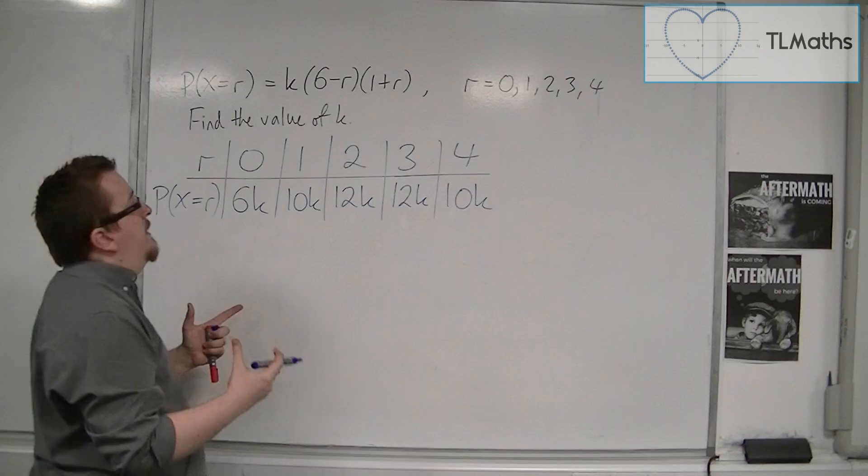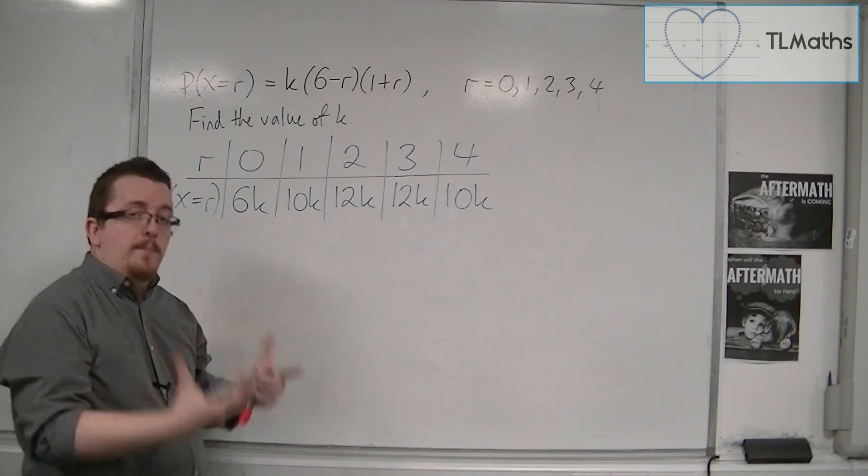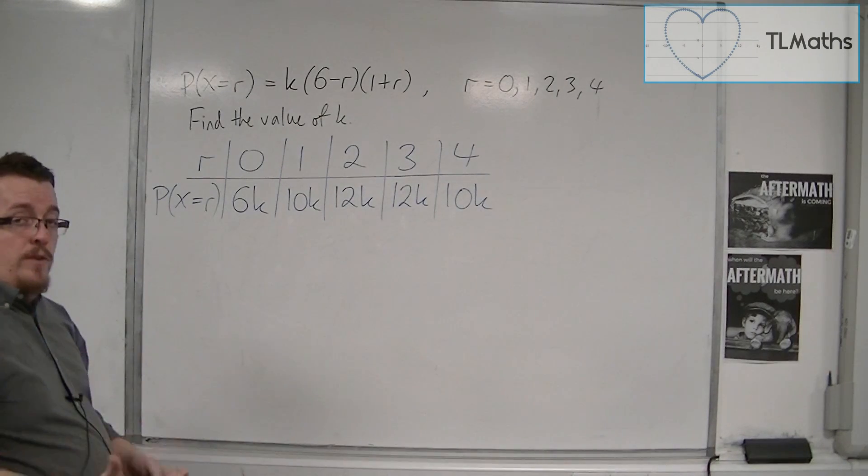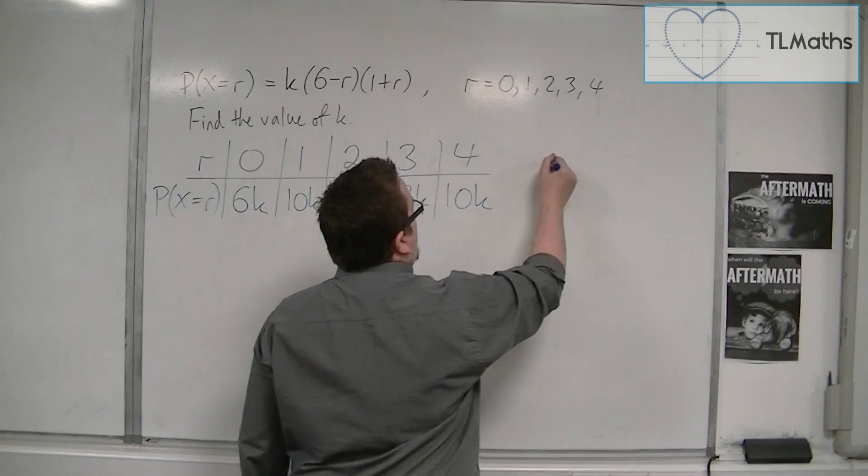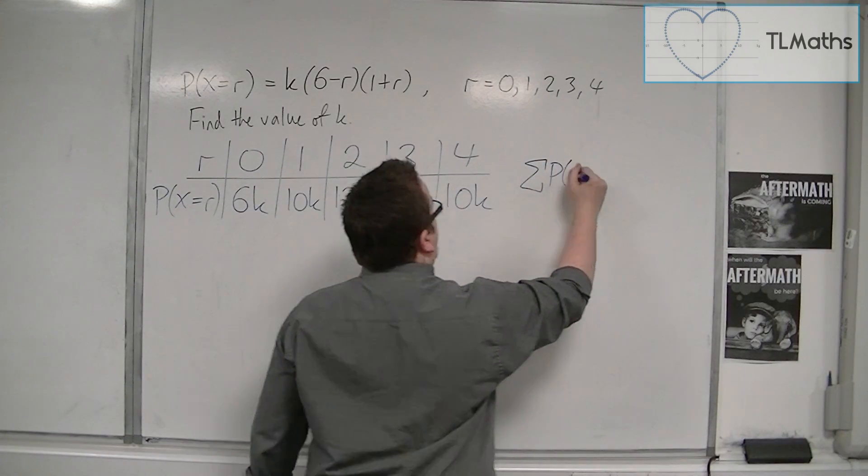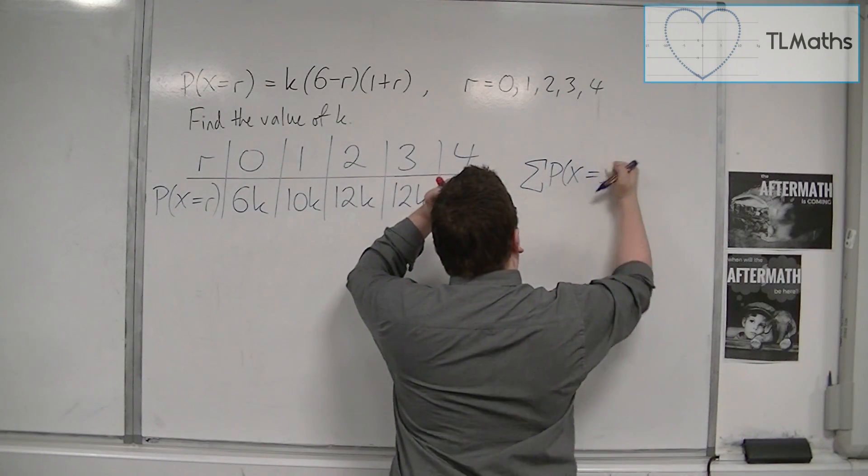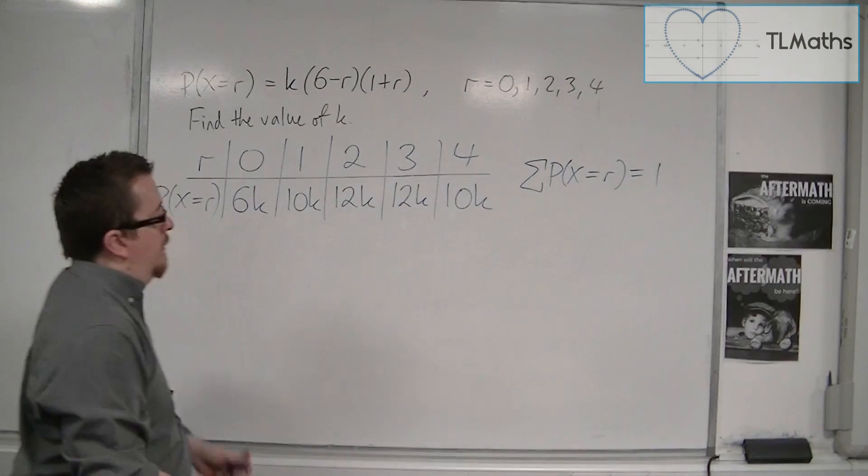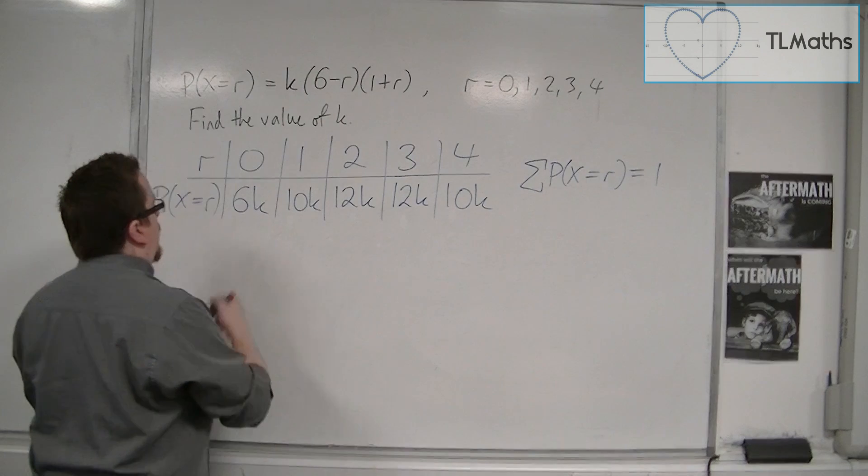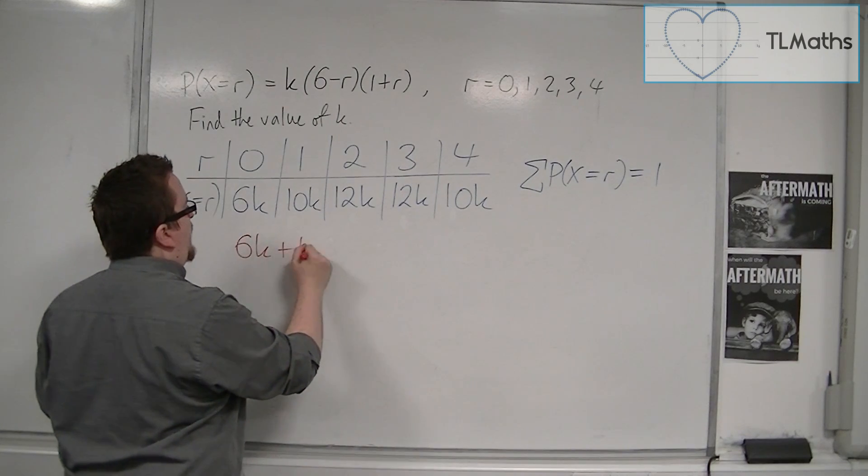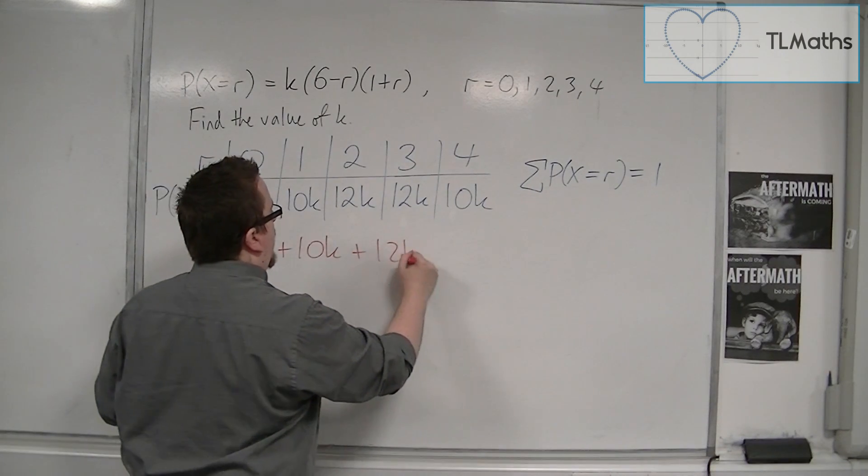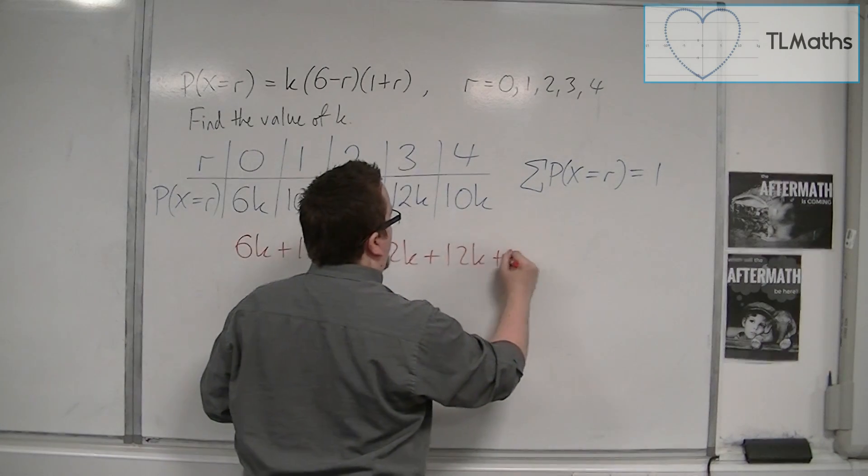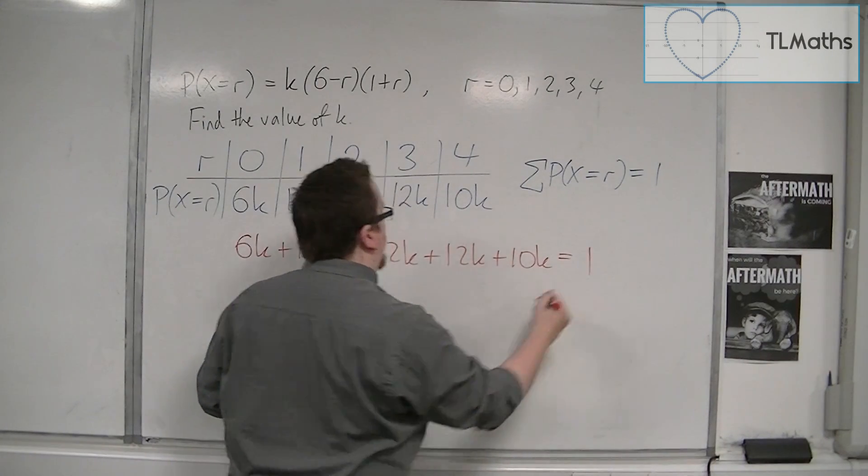So that is the actual tabular form. We now use the fact that the sum of the probabilities is equal to 1. So 6k plus 10k plus 12k plus 12k plus 10k must be equal to 1.